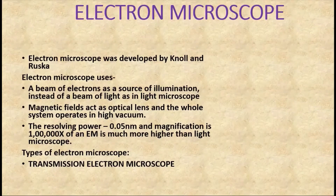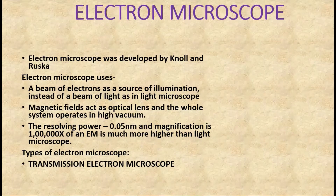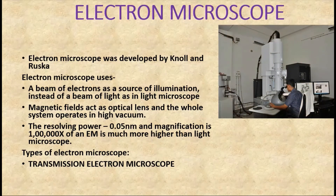Coming to the electron microscope, it was developed by Knoll and Ruska. In the electron microscope, instead of light we use a beam of electrons, and instead of optical lenses, the electron microscope uses magnetic fields. This whole system of the electron microscope is operated under high vacuum conditions.